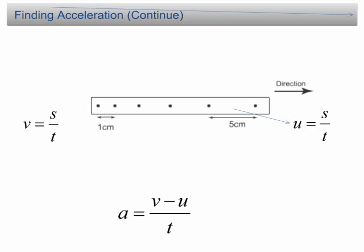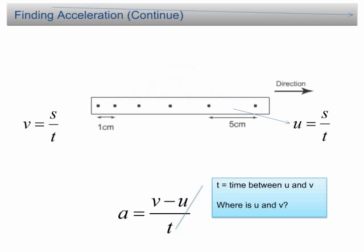The problem arises when we want to find the time taken. There are 5 ticks from the first dot to the last dot; however, this 5 ticks is not the time we want. The time taken is the time between the initial velocity u and the final velocity v. Since u and v are average velocities, they are in the middle of the length we measure for finding u and v. For example, u is in the middle of the 5 cm and v is in the middle of the 1 cm. As a result, the time between u and v is 4 ticks.